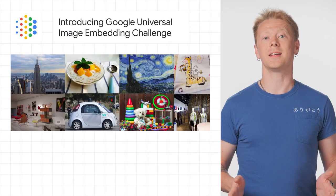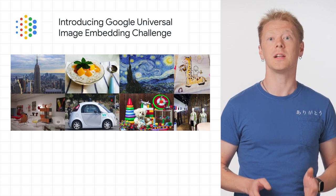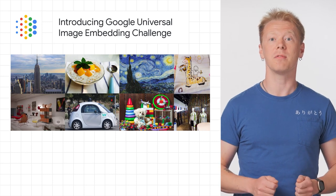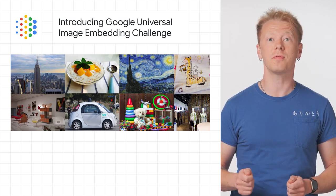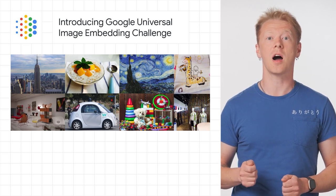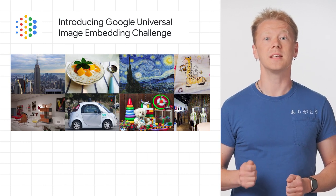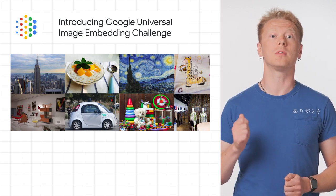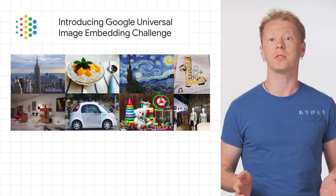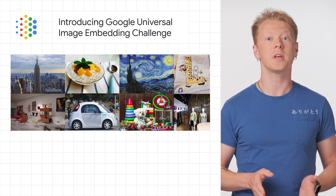Learn how with Rich Hall in his new article on Flutter Medium. We are excited to announce the Google Universal Image Embedding Challenge hosted by Kaggle in collaboration with Google Research and Google Lens. In this challenge, participants are asked to build a single universal image embedding model capable of representing objects from multiple domains at the instance level. We believe this is the key for real-world visual search applications, such as augmenting cultural exhibits in a museum, organizing photo collections, and visual commerce.